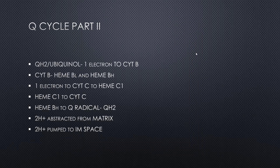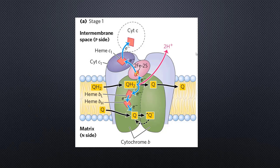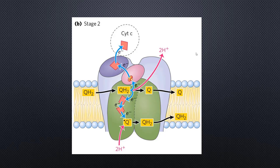Two H+ or two protons are abstracted from the matrix, and this eventually leads to the production and generation of a QH2 molecule — the ubiquinol molecule. This QH2 then dissociates from the cytochrome B molecule and traverses through the lipid bilayer membrane of the inner mitochondrial membrane. The other electron from this QH2 travels to the Rieske iron-sulfur proteins.